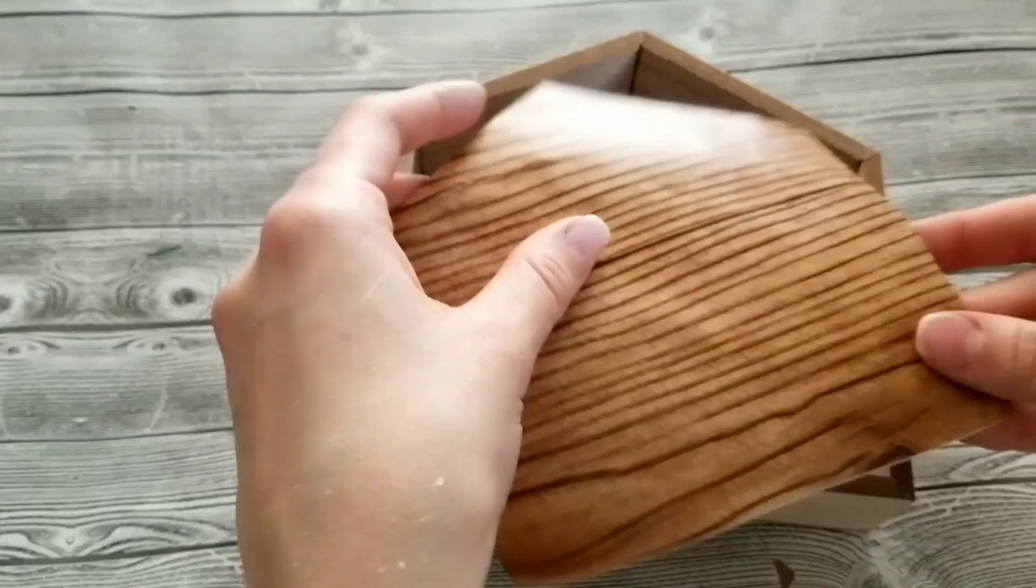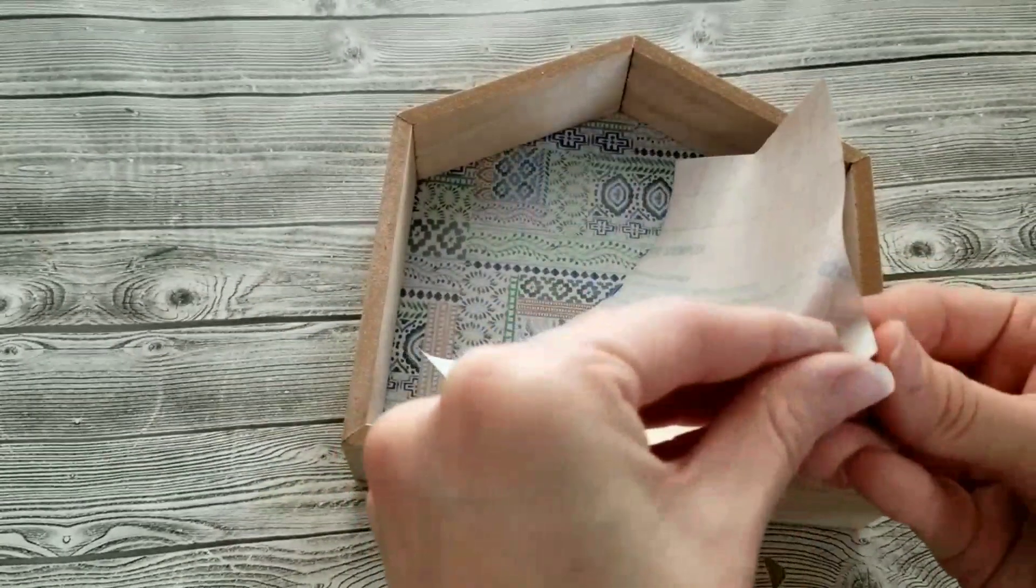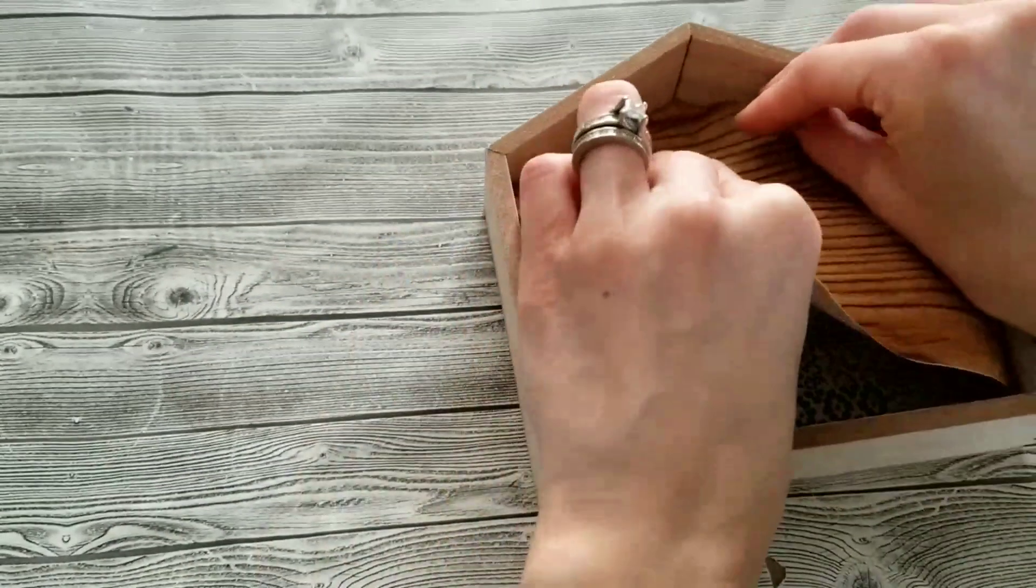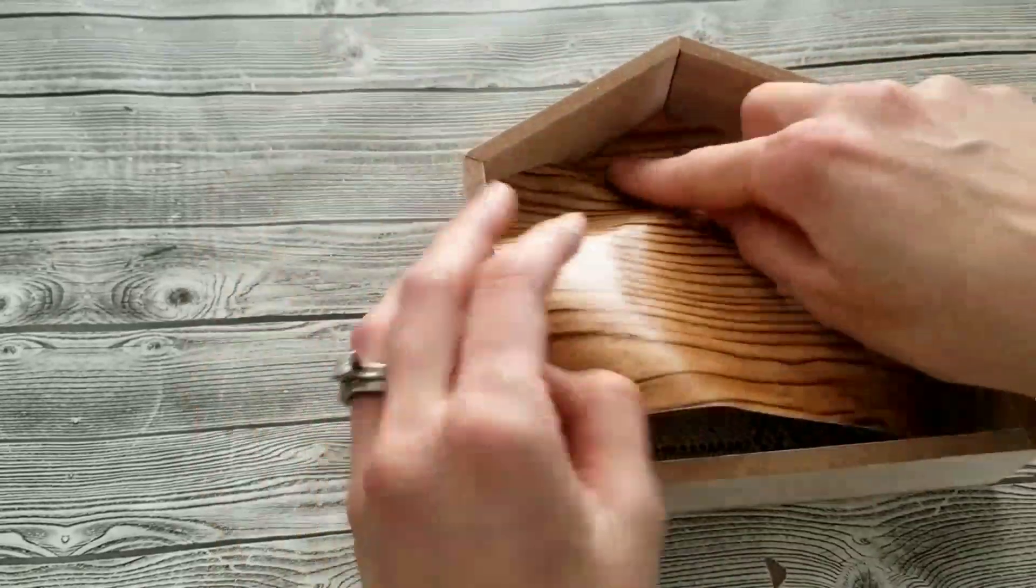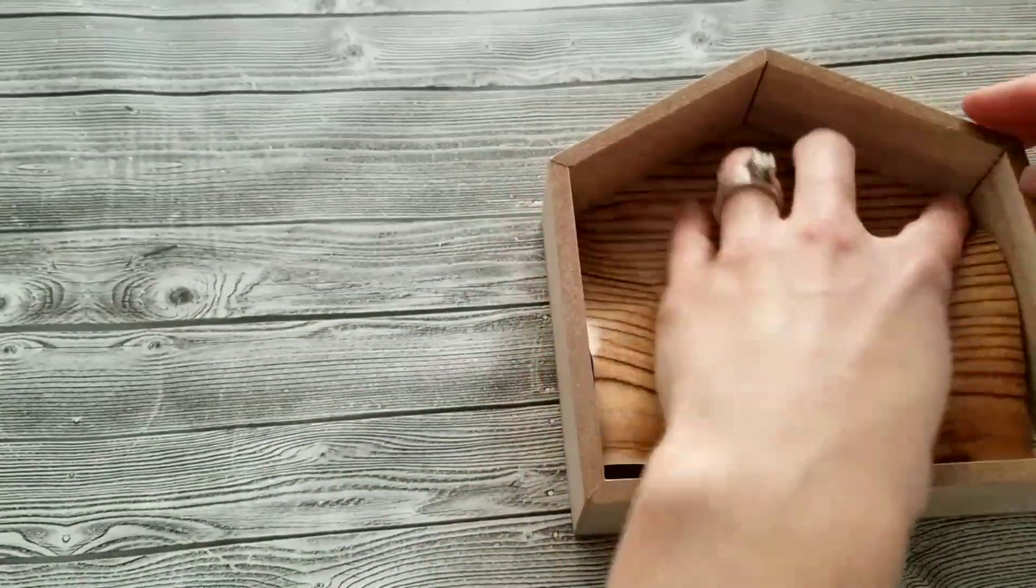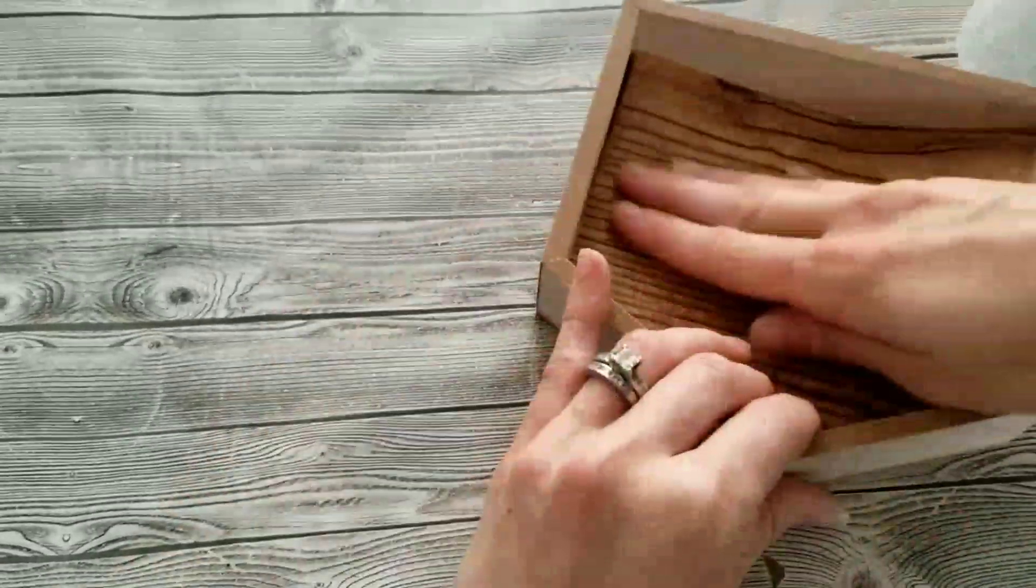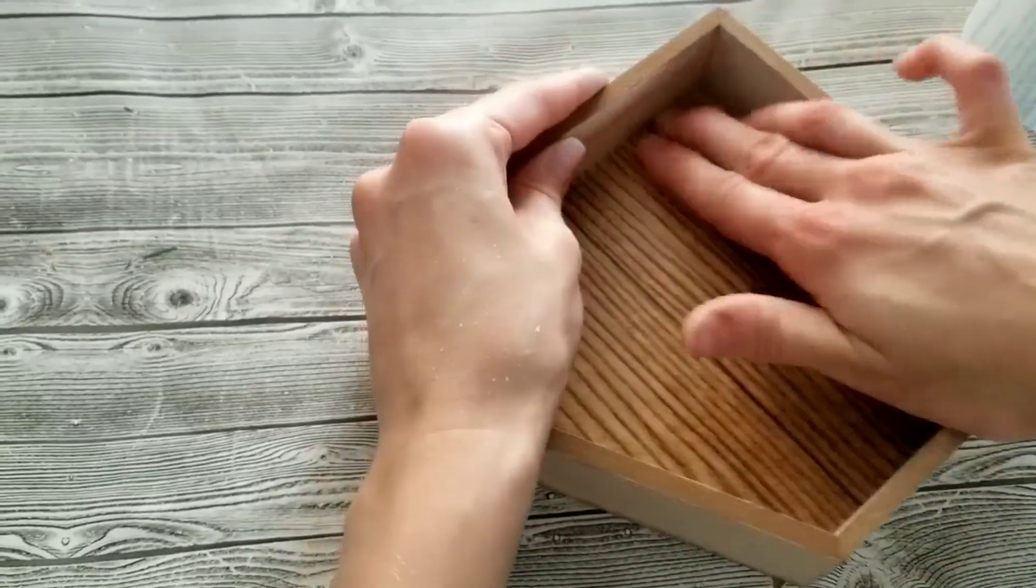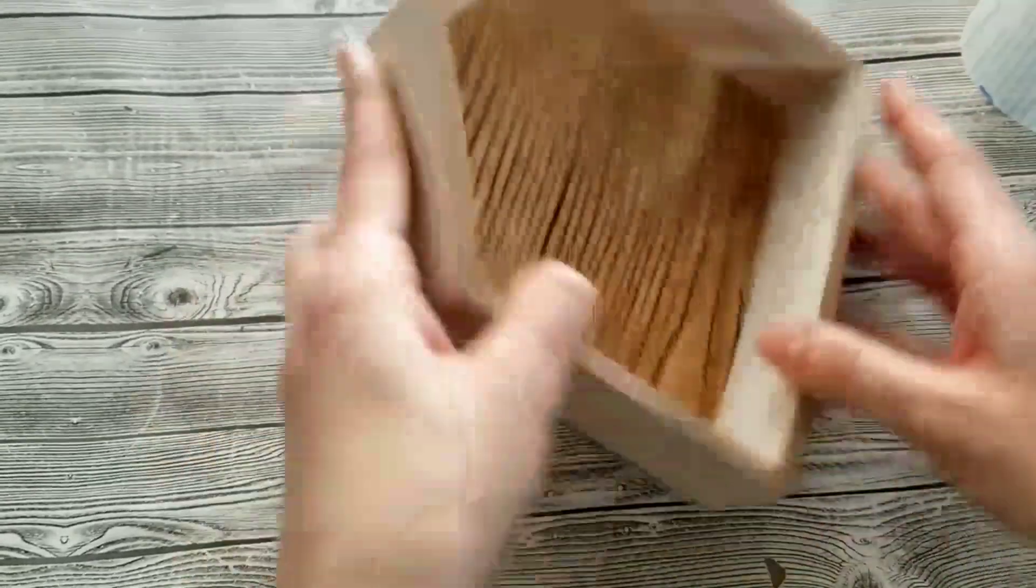Once you have the contact paper trimmed to the right size, you can go ahead and peel the back off. You can really start from any side of this. I decided to start from the point and I did have to adjust it a few times to make sure that it was laying correctly and covering all the way up to each edge. Once you have it in place the way you like it, you can go back through and smooth it down and work out all of the bubbles.